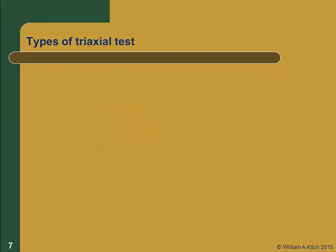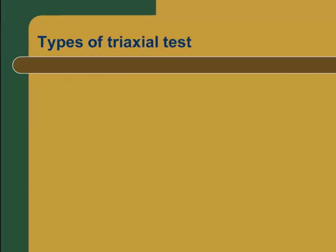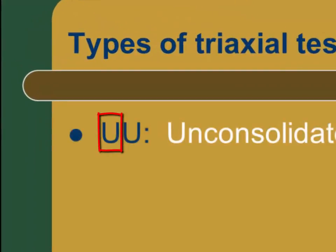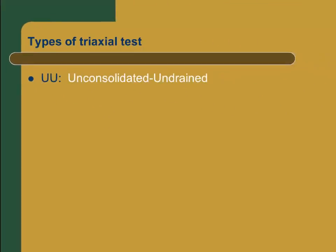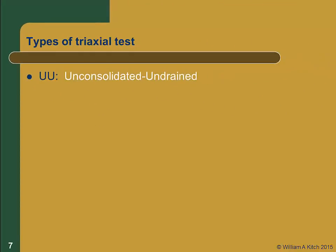We use a two-letter designation to identify the different types of triaxial tests. The first letter specifies the drainage conditions during the consolidation phase, and the second letter specifies the drainage conditions during the shear phase. The UU test is an unconsolidated undrained test — the drainage valve is always closed. This is a total stress test and does not usually entail measuring pore pressures. It is also called a Q test, since we do not have to wait for consolidation or for drainage during the shear phase.